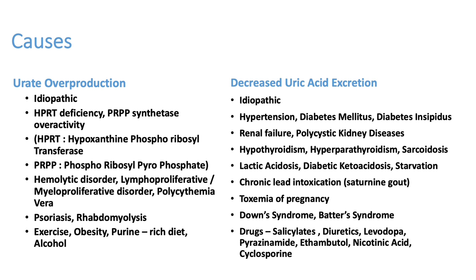Other causes include hypothyroidism, high cholesterol, sarcoidosis, hyperparathyroidism, diabetic ketoacidosis, starvation, chronic lead poisoning, and toxemia of pregnancy. So many syndromes can produce high uric acid.